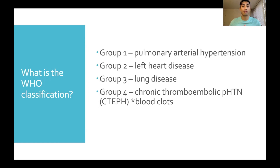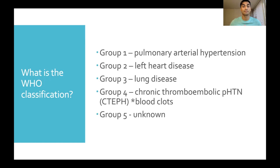Group four is chronic thromboembolic pulmonary hypertension, abbreviated CTEPH. This is due to blood clots — if there's a clot in the blood vessel, blood backs up and causes an increase in pressure. Group five is a miscellaneous group of causes where we don't completely understand the mechanism driving the increase in pressure, but some examples are sarcoidosis and hematologic and metabolic abnormalities.